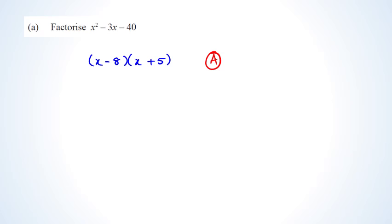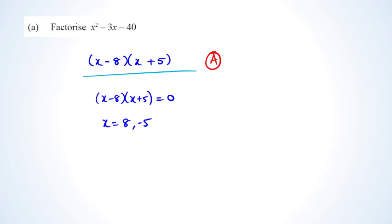Some people continue past factorizing and set the expression equal to 0, solving to get x equals 8 or negative 5. The answer schedule says do not penalize this, but don't waste time — just read the question. If it says solve, find the answer. If it says factorize, stop at the factorized form.